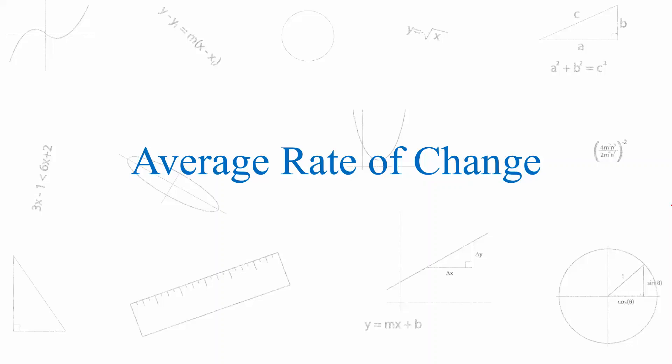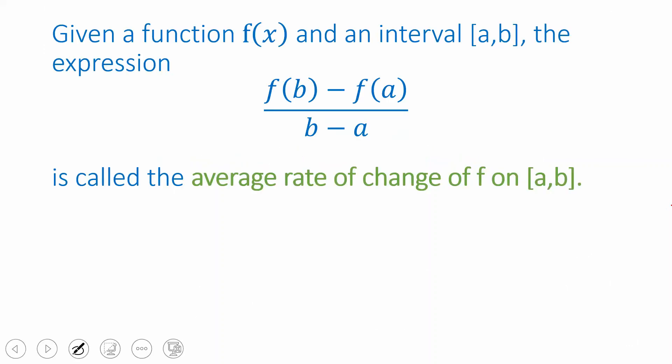Let's review the idea of average rate of change. First of all, the definition of average rate of change requires us to have a function and an interval. So if our function is f and our interval goes from a to b, then we can evaluate the average rate of change using this formula.